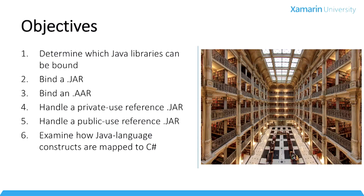After that we will discuss jar files that use other jar files. So you might have an input jar that has a dependency on another jar, and we'll talk about how to handle that, and there are two cases to see there. Finally, we'll do a survey of several of the most common Java language constructs and see how they get mapped to C# when bindings are created.